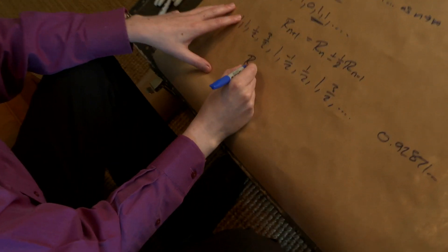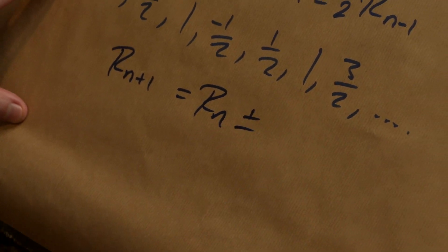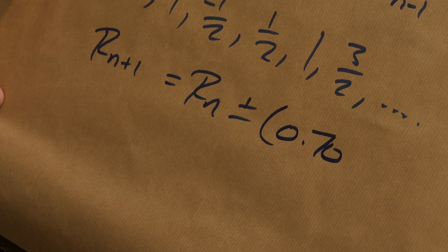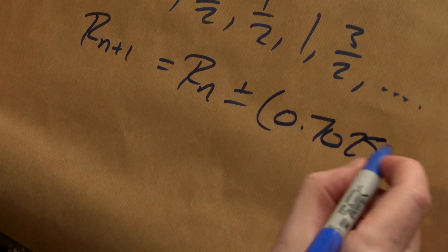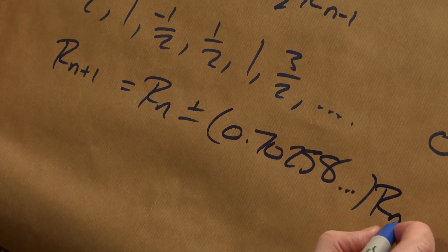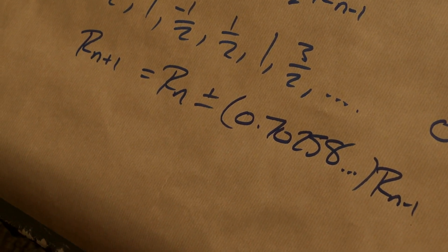What is that value? We know what the value is — it's a funny number though. The value where it neither grows nor dies is plus or minus 0.70258 something, with the previous value there. So that will neither grow nor die — it's in the sweet spot right in between.